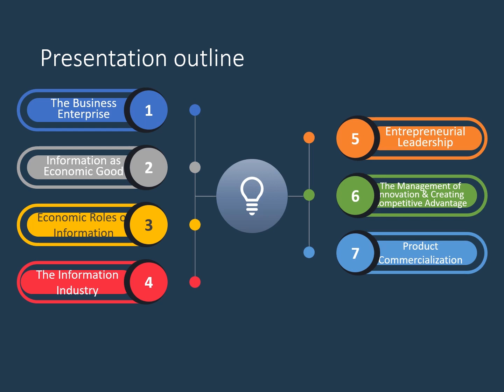Without further ado, let's move to the outline of this presentation. There are seven outlines to be discussed. First is the business enterprise, second is information as economic good, third is economic roles of information, fourth is the information industry, fifth is entrepreneurial leadership, and sixth is the management of innovation and creating competitive advantage.